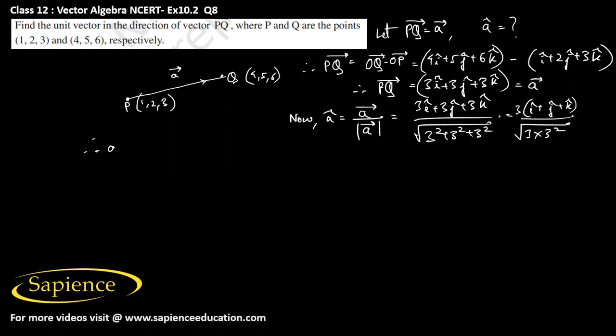Obviously 3 will come outside therefore A cap is equal to 3 into I cap plus J cap plus K cap divided by 3 root 3.